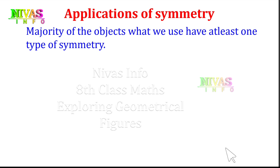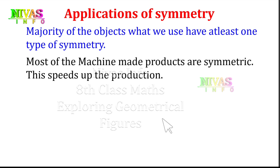At least one type of symmetry is compulsory. Most machine-made products are symmetric. This increases the speed of production.